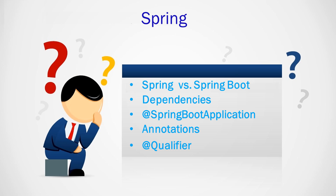To exclude any predefined auto-configured dependencies from Spring Boot, you can annotate the main class with @ComponentScan and use the 'exclude' parameter, specifying the classes you want to exclude from auto-configuration.